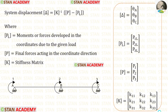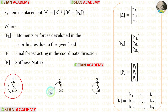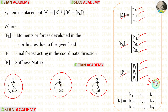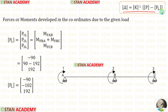We know the formula to find the slope values: the delta matrix equals K matrix inverse multiplied by the quantity P matrix minus PL matrix. In this analysis there are three coordinates, so inside the delta matrix, PL matrix, and P matrix we will have three values each. The size of the stiffness matrix will be 3 cross 3, meaning inside the matrix we will have three rows and three columns.